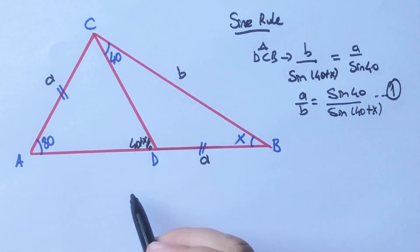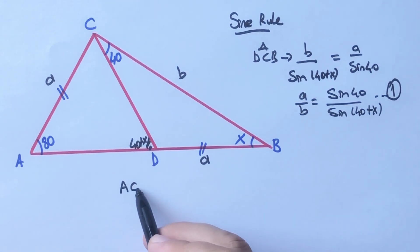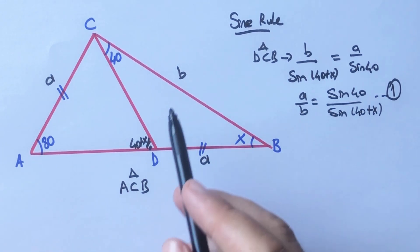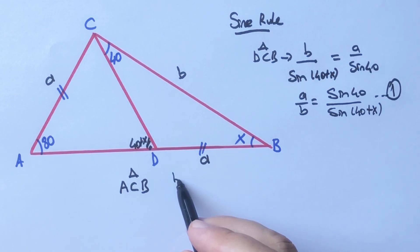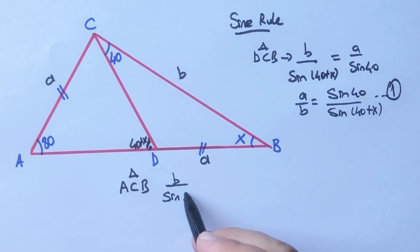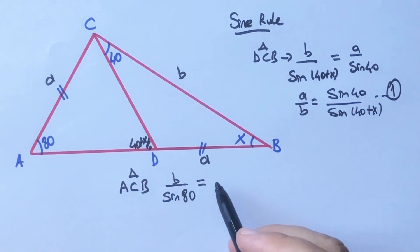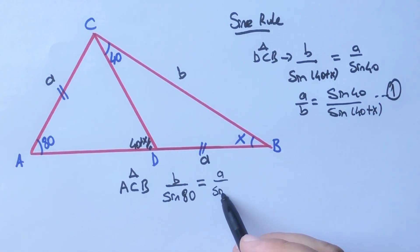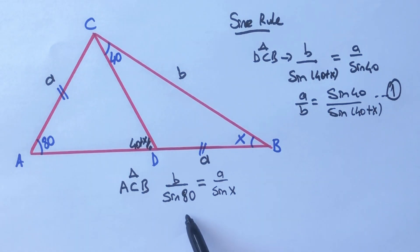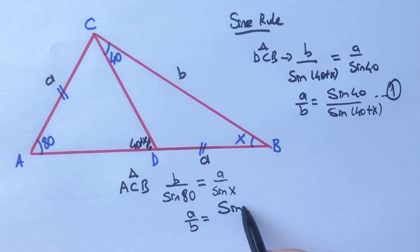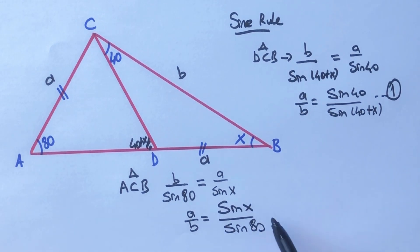Now focus on the biggest triangle and apply the sine rule: b over sine 80 equals a over sine x. Therefore a over b equals sine x over sine 80. This is the second equation.